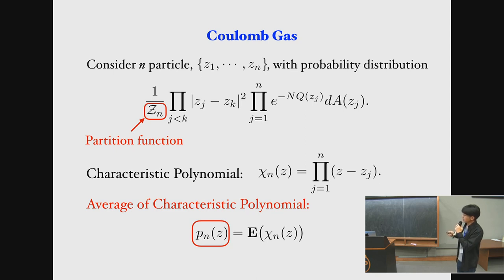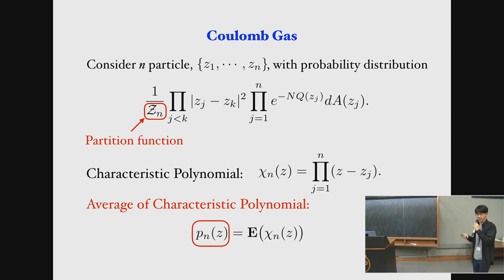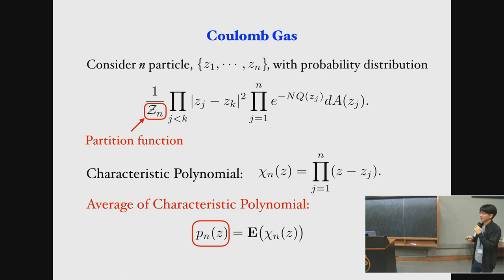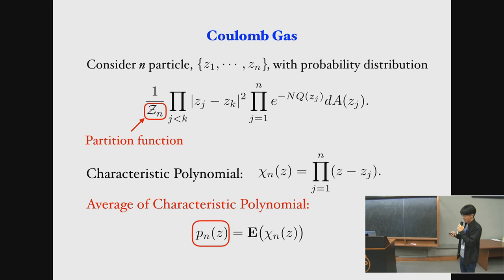I'm going to use C_N for the normalization constant called the partition function. The partition function is one object of interest. Another thing of interest is the characteristic polynomial, which is a degree-N polynomial whose zeros are at the Coulomb gas positions — so it's a random polynomial, because the Coulomb gas is randomly distributed. If you take the average of this random polynomial, you get this deterministic polynomial P_N. There are two objects: the partition function and this polynomial P_N. In the large-N limit, that's the interest of the talk.